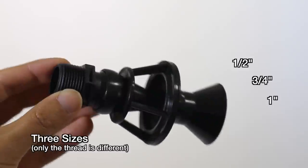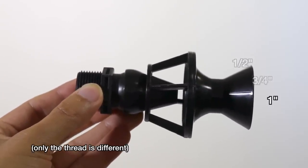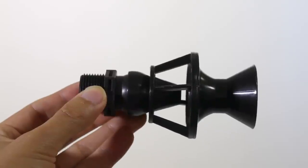The only difference in these three sizes is the threaded portion. The funnel section is identical in all three. In fact, the threaded portion is a standard lockline fitting.